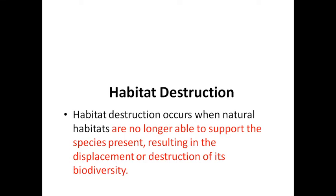Habitat destruction occurs when the natural habitat of a particular organism is no longer able to support particular processes, and the resulting form is the displacement, destruction and decay of biodiversity. Basically, habitat destruction is the decay of biodiversity.